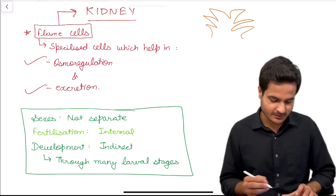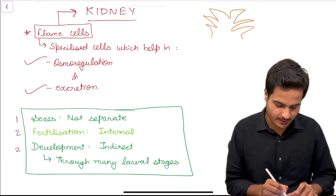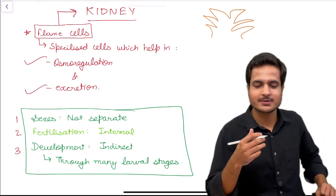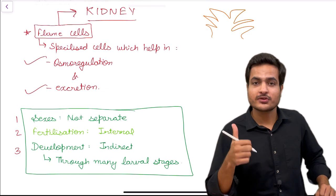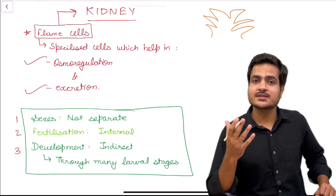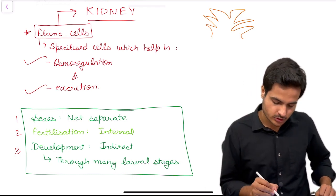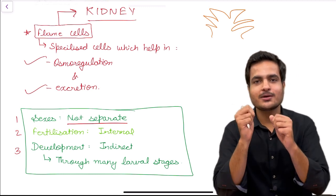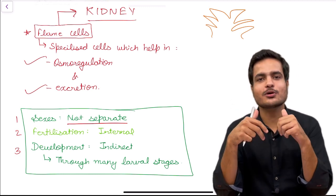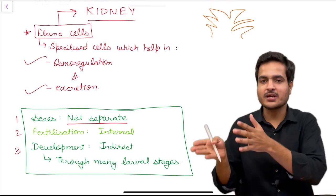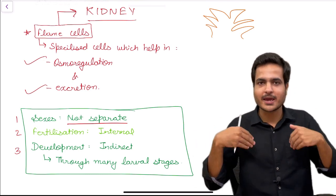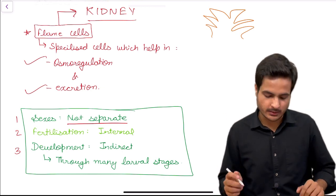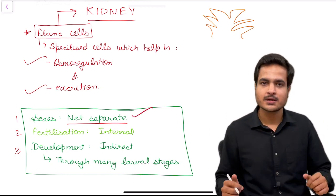Now the young ones box, discussing three parameters. First, whether sexes are separate or not — here sexes are not separate, similar to Ctenophores. Both male and female sex organs are present on the same animal body; therefore there are no separate sexes.